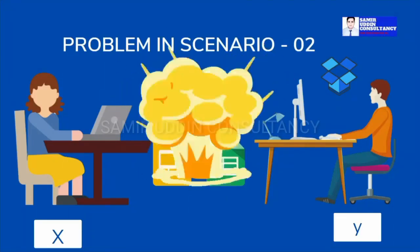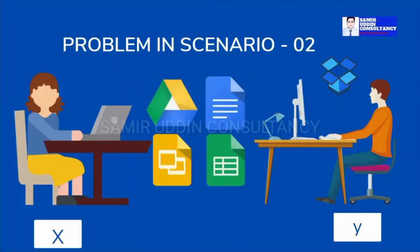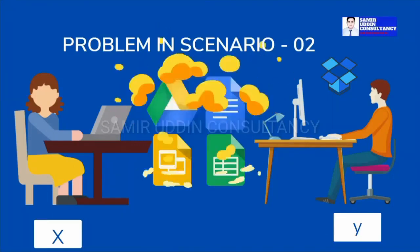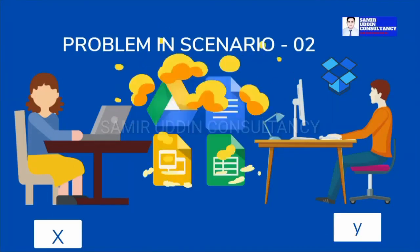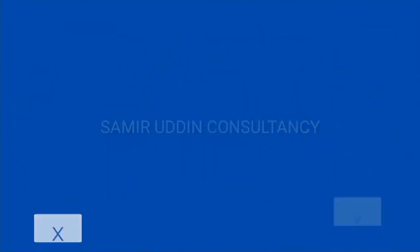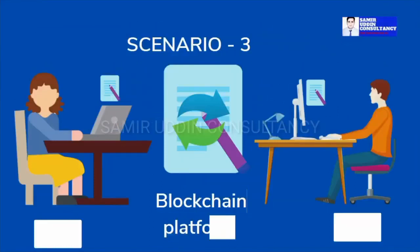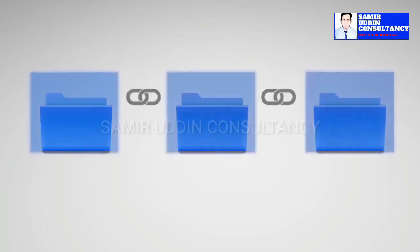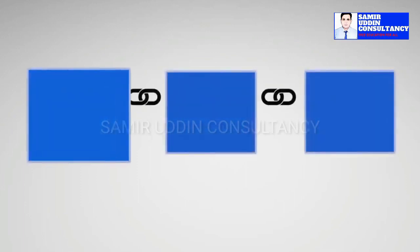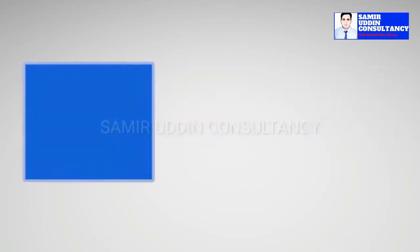How does blockchain work? The fundamental goal of blockchain is to let people, especially those who don't trust one another, to communicate vital data in a safe, tamper-proof manner. Blocks, nodes, and miners are three main concepts in blockchain.